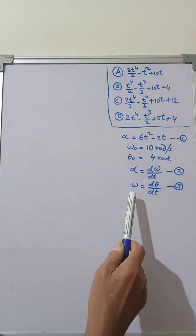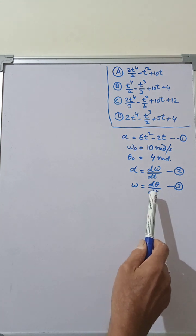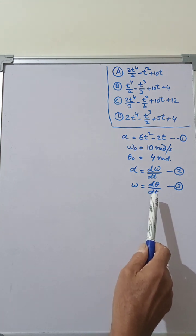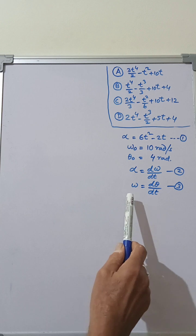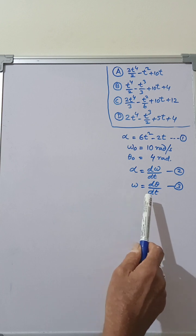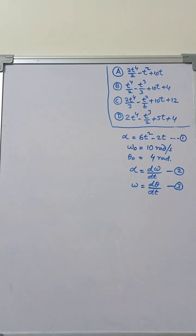Similarly, angular velocity is the time rate of change of angular position. Therefore we write omega equals d-theta by dt, which is Equation 3.